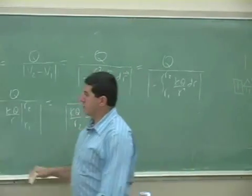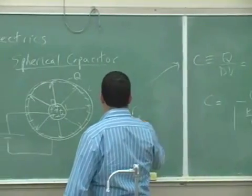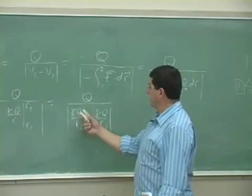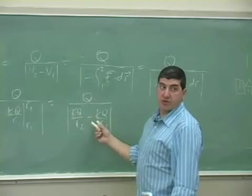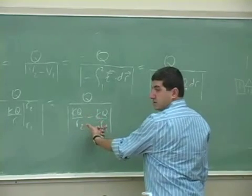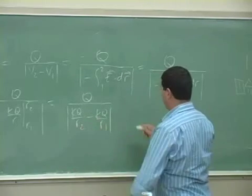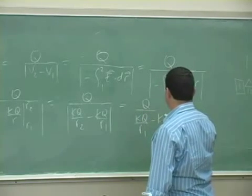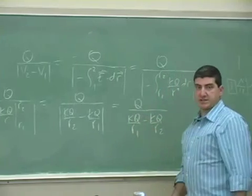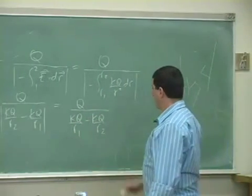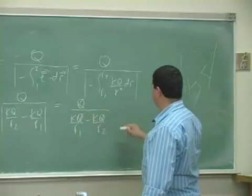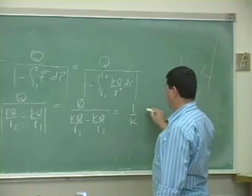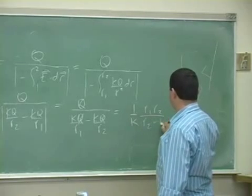Now since R2 is greater than R1 — R2 is the outer radius — this term is going to be a smaller number than that. So when we take the absolute value, we reverse: KQ over R1 minus KQ over R2, which is now positive since R1 is a smaller number. The Q's cancel, K comes out, and the best way to express this is 1 over K times R1 R2 divided by R2 minus R1.